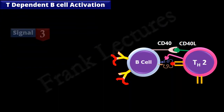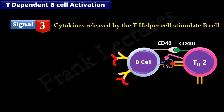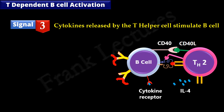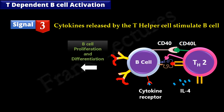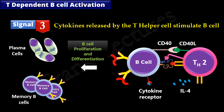The third and final signal for T-dependent B-cell activation is provided by the cytokines released by the T-helper cell. Interaction of B and T-cells induces the expression of new cytokine receptors on the surface of the B-cell. T-cells release cytokines such as interleukin-4, which bind to the cytokine receptors present on B-cells. As a result, the B-cell starts to proliferate and differentiate into antibody-secreting plasma cells and memory B-cells.